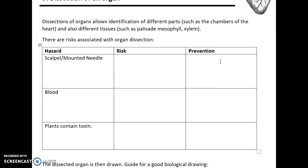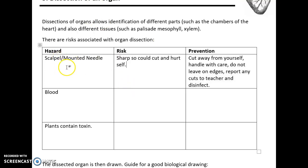What they could ask in the exam regarding this practical are the hazards and therefore the risks and prevention methods for organ dissections. For example, the use of the scalpel - the risk is that you could cut yourself as the scalpel is sharp. In order to prevent that, you should cut away from yourself. Don't leave it on the edges, report it, and make sure that you disinfect any cuts that you receive.